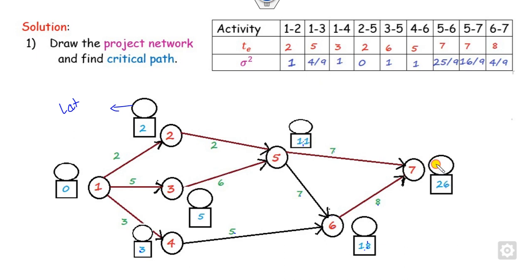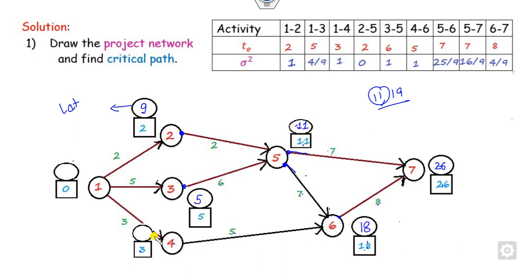For the backward pass (latest occurrence times), start from the end. Working backward: 26 minus 8 = 18. From that node, take the minimum of two paths: 18 minus 7 = 11, and 26 minus 7 = 19. The minimum is 11. For the adjacent node: 11 minus 2 = 9. From there, 11 minus 6 = 5. Also, 18 minus 5 = 13. Since there are three incoming paths to the start node, take the minimum: 9 minus 2 = 7, 5 minus 5 = 0, and 13 minus 3 = 10. The minimum is 0, confirming the start node value.